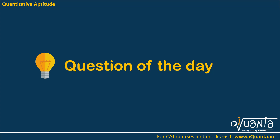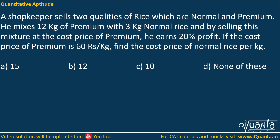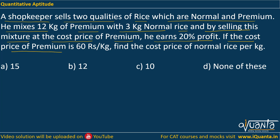Today's question is based on profit and loss. A shopkeeper sells two qualities of rice — normal and premium. He mixes 12 kg of premium with 3 kg of normal rice and by selling this mixture at the cost price of premium, he earns 20% profit. The cost price of premium is Rs 60 per kg.